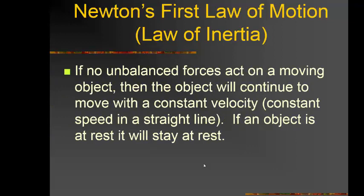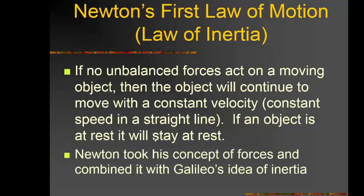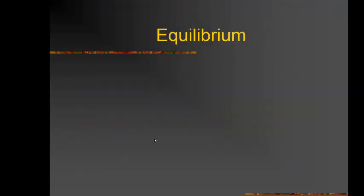Newton's first law of motion states that if no unbalanced forces act on a moving object, the object will continue to move with constant velocity. And if an object is at rest, it will stay at rest. Newton combined his concept of force with Galileo's idea of inertia.